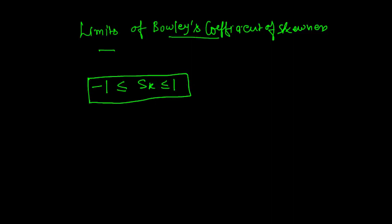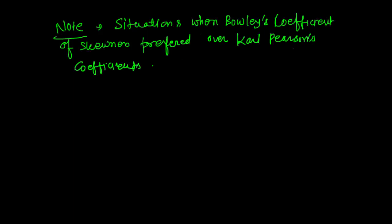Now situations when we prefer Bowley's coefficient of skewness over Carl Pearson's: Carl Pearson's coefficient is based upon mean, median, and mode, so when mode is ill-defined, then we can use Bowley's coefficient.